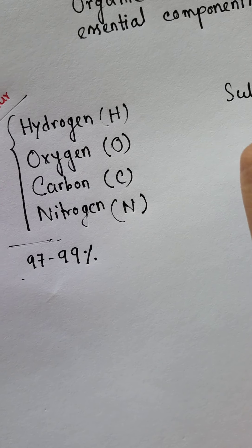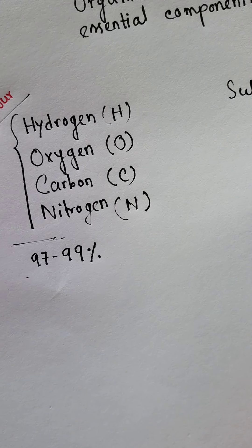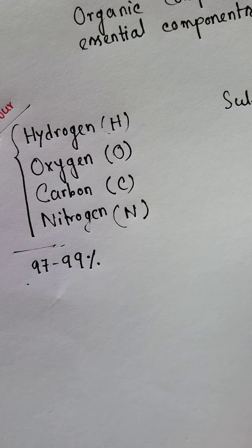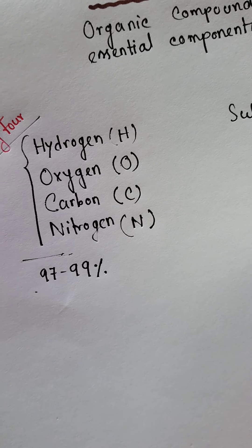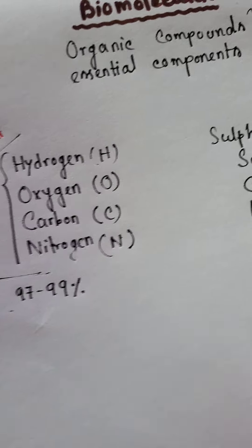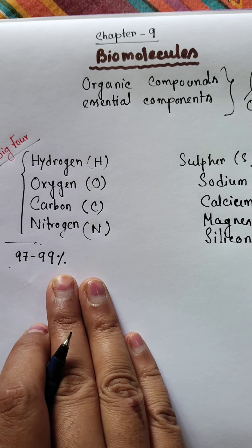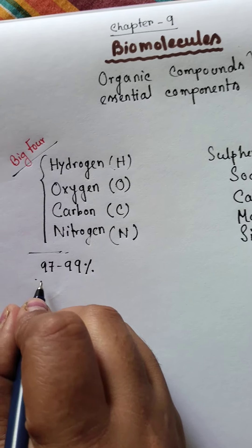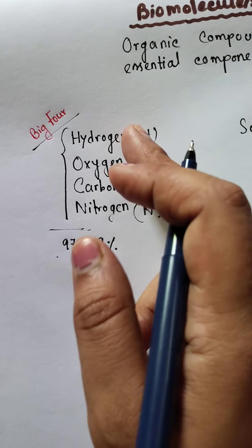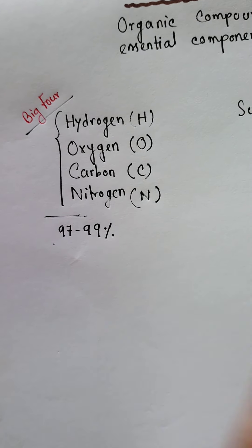Other elements include sulfur, sodium, calcium, potassium, magnesium, and silicon. Silicon is found in a very small trace amount in the living body, but these elements are still present. These elements form biomolecules found inside living organisms, though the Big Four constitute 97 to 99% of the body.